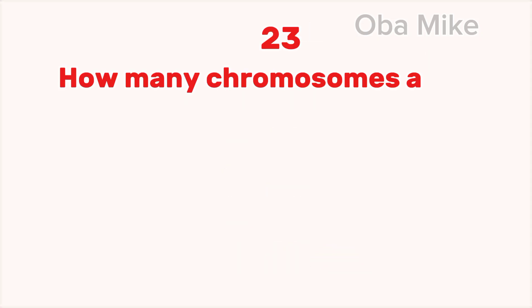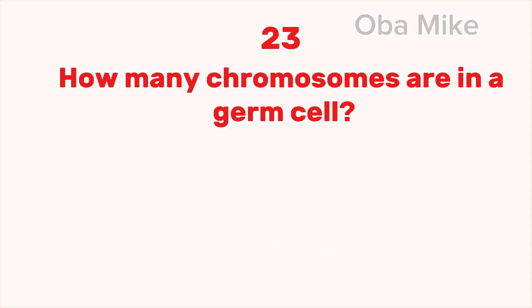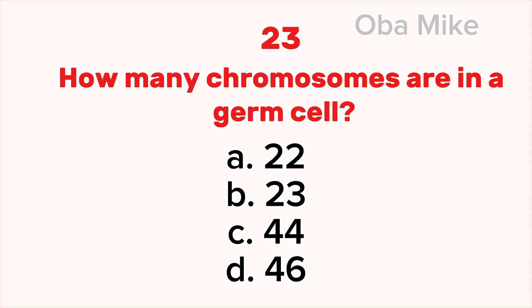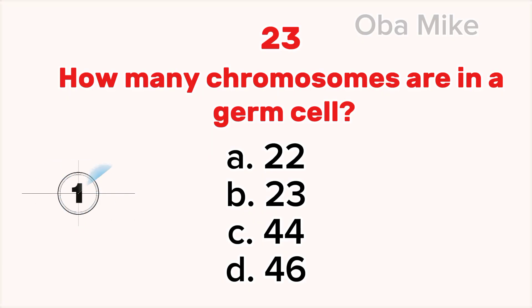23. How many chromosomes are in a germ cell? A. 22, B. 23, C. 44, D. 46. The correct answer is D. 46.